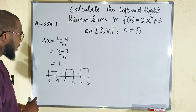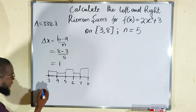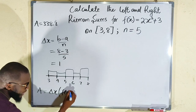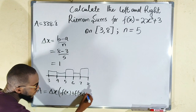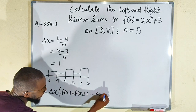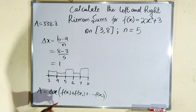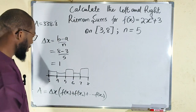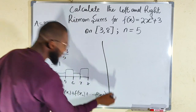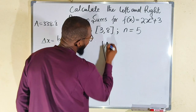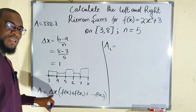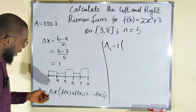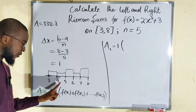The area formula is: dx multiplied by f(x₁) plus f(x₂), continuing up to f(xₙ). These f(xᵢ) values are the corresponding heights of every single rectangle. For the left Riemann sum, the area equals dx times the sum of f at x-values 3, 4, 5, 6, and 7 — we stop at 7 because we use left endpoints.